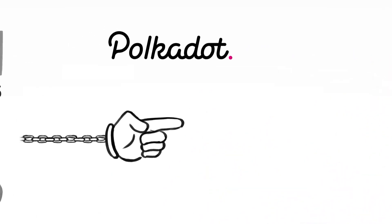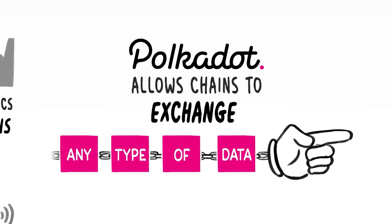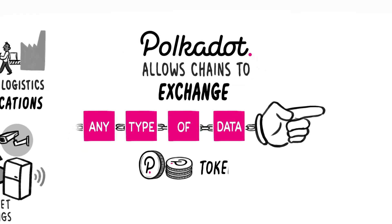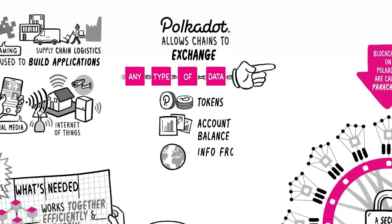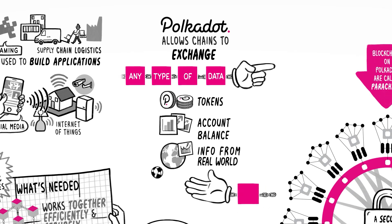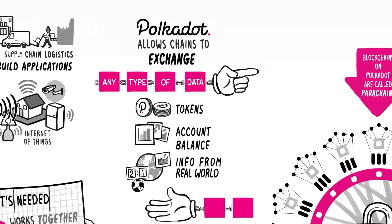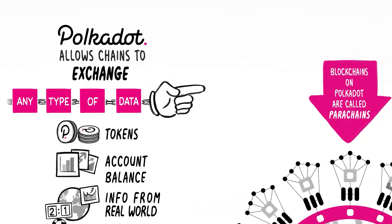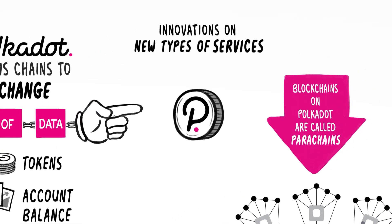One of the first cryptocurrency projects to position itself as a Web 3.0 platform was Polkadot. For developers, there is a set of Polkadot Substrate tools that allows you to create separate blockchains interconnected within the Polkadot ecosystem. In addition, Web 3.0 blockchains include Ethereum, Solana, Avalanche, Polygon, and others.